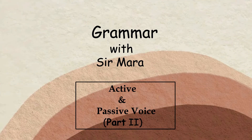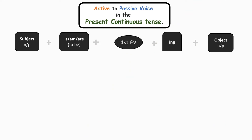Today we will be continuing our class with active to passive voice in the present continuous tense. The structural formula is there in the boxes: present continuous tense — subject plus is/am/are plus first form of verb plus -ing plus the object.